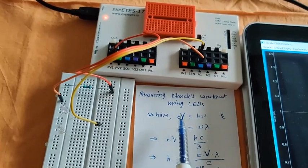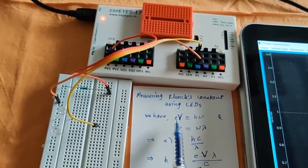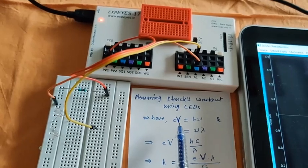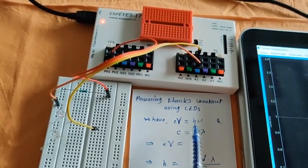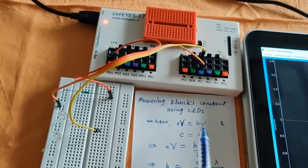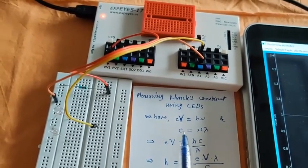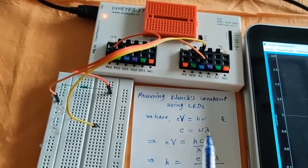E stands for electronic charge, V stands for voltage or threshold voltage, h stands for Planck's constant, and ν stands for the frequency of the radiation. This relation you know very well.